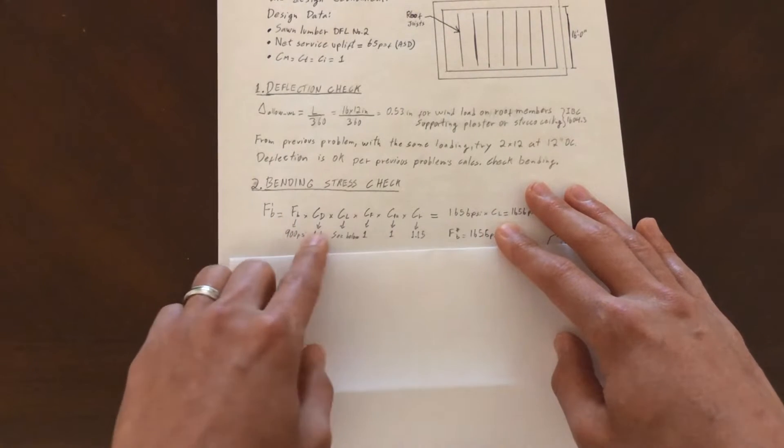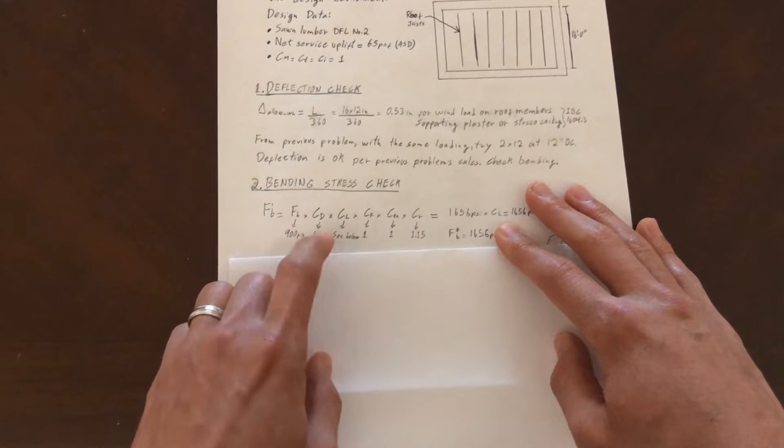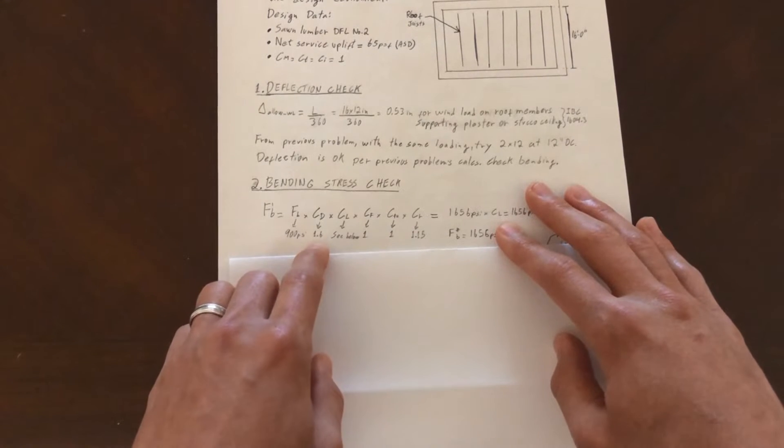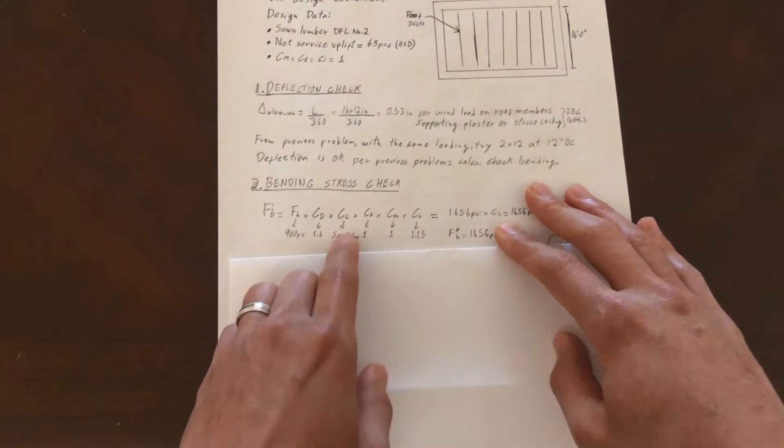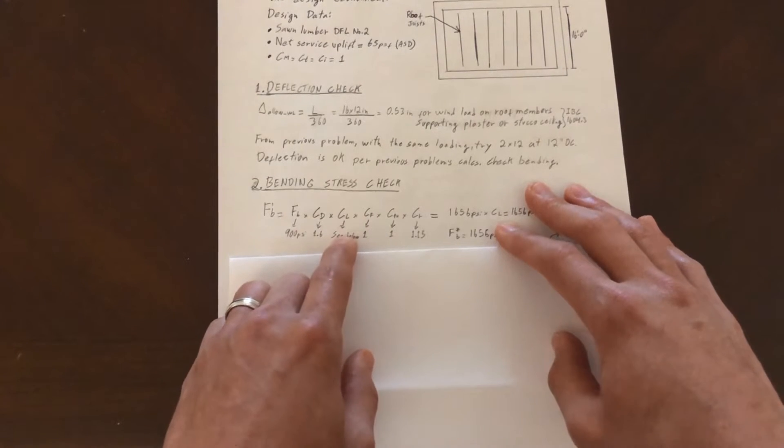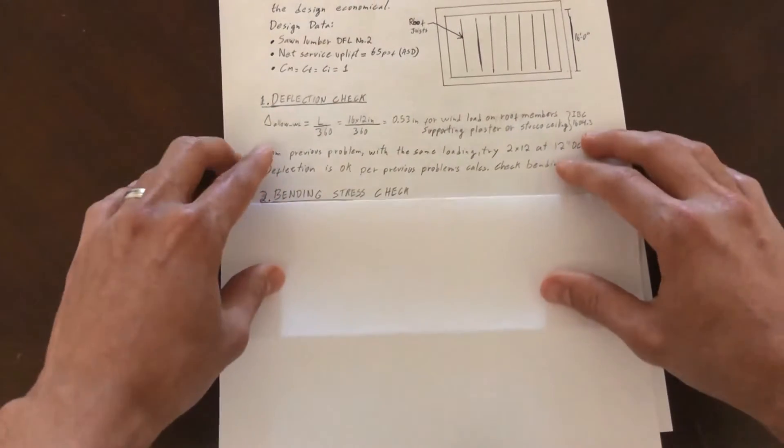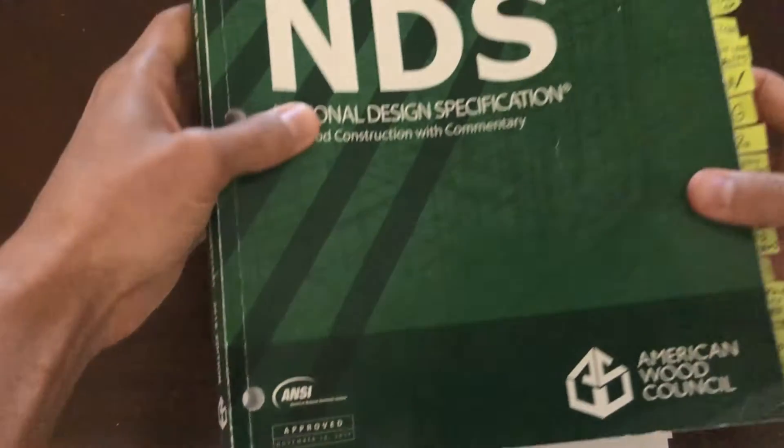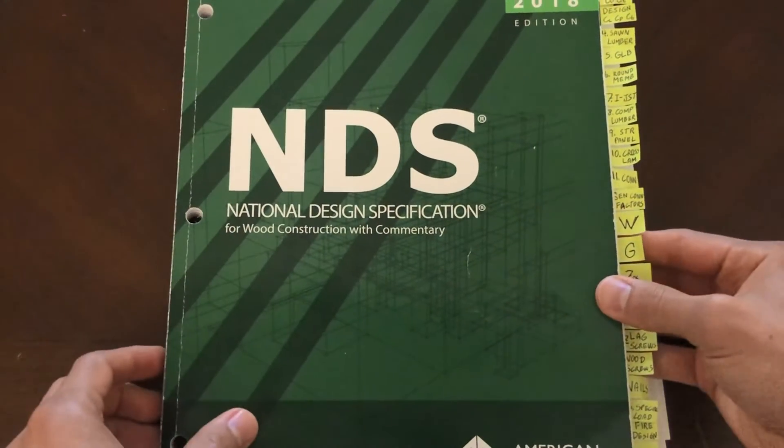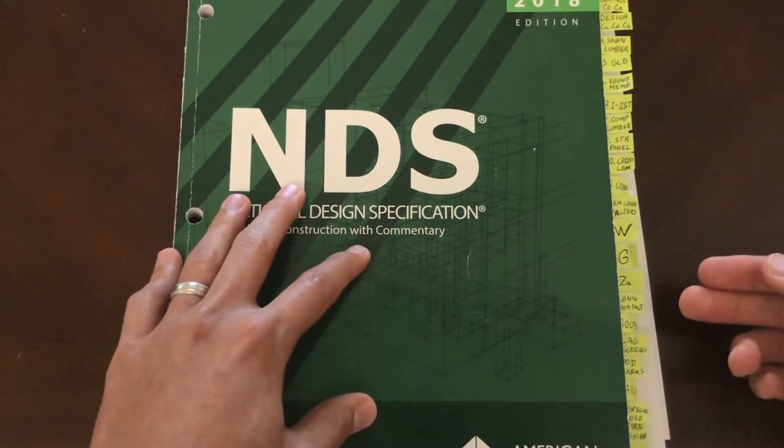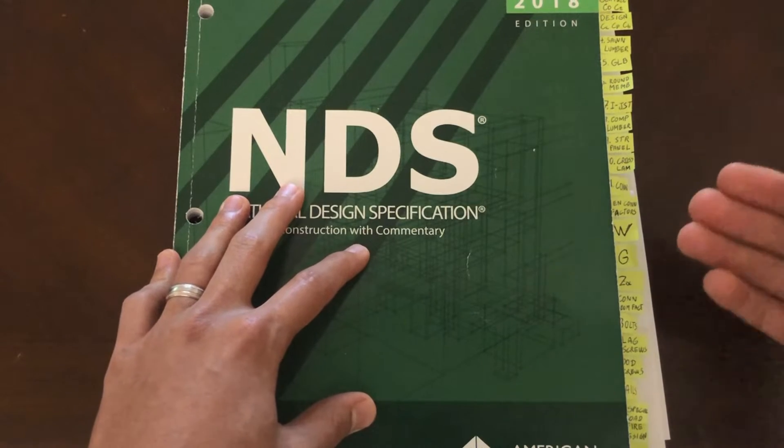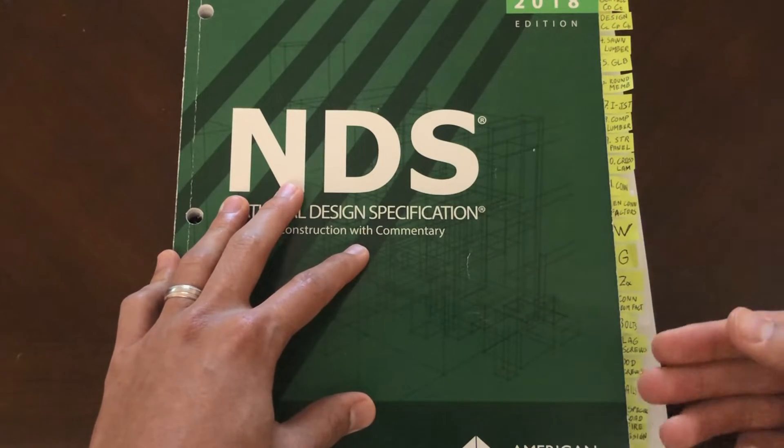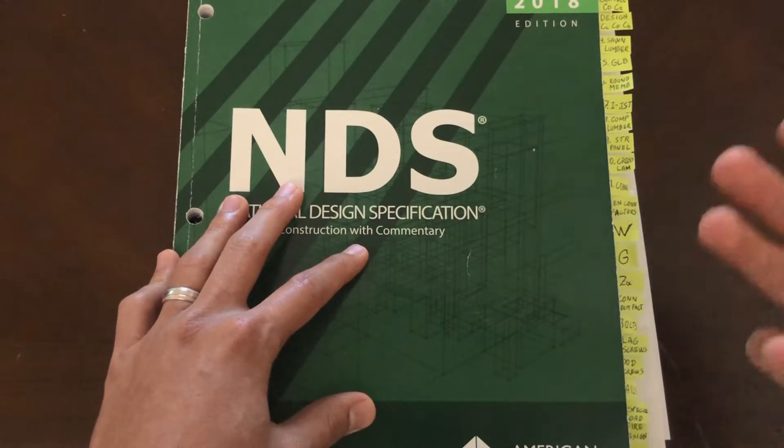Now let's get to our bending stress check. The first thing we need to note here is that all the factors are very similar to last time except C sub D, which is equal to 1.6 for wind load, and C sub L we're going to calculate now because it's not going to be equal to 1.